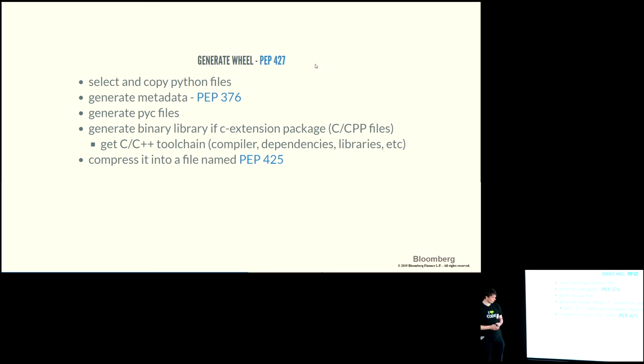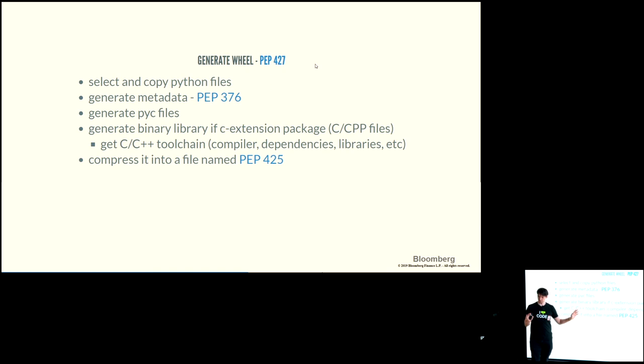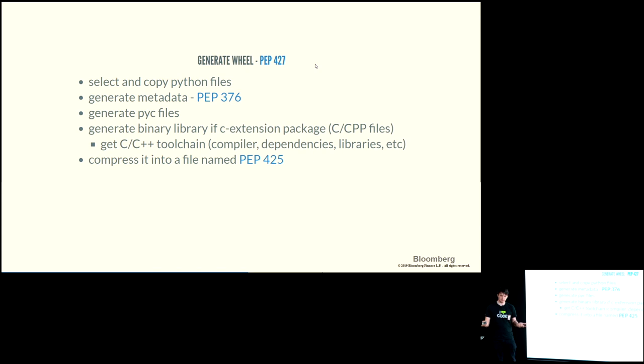This is where the Python Packaging Authority and Conda differ. Pip says it is not responsible for providing C++ toolchains — at least for now, maybe that will change. Conda, on the other hand, takes it upon itself to also provide the compiler, and even more — dependencies, libraries, header files, all that stuff. The current approach of the Python Packaging Authority is that it's up to the user to provide those tools.